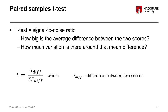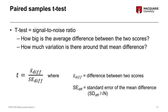We have a t-formula here which looks pretty similar to our other t-formulas. We've got x-bar diff, which is the average difference score between the two scores, divided by the standard error of the difference. The standard error of the difference we can calculate just by looking at the standard deviation of the difference, dividing by the square root of the sample size, just like any other standard error calculation we've previously talked about.